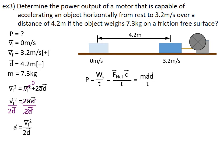And now acceleration has been isolated. I will sub in 3.2 for final velocity and 4.2 for displacement. I will make sure that I double bracket the bottom and then I will run it through my calculator. The acceleration is 1.219 meters per second squared. Now I'm good to go on.